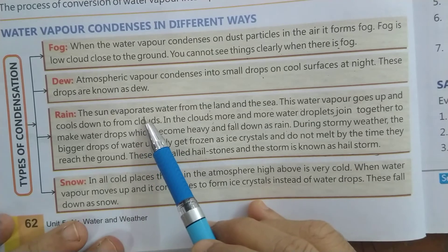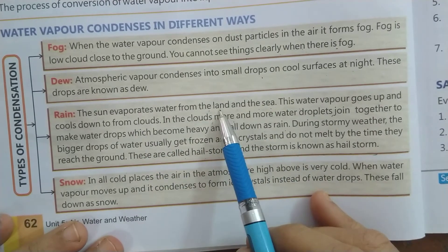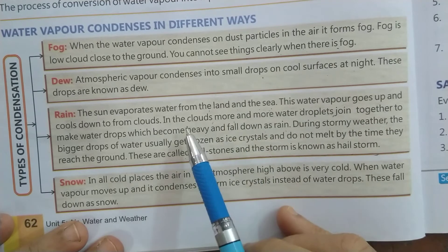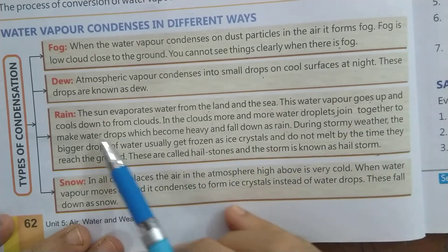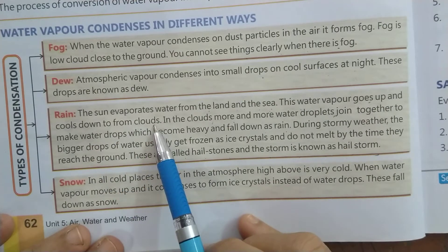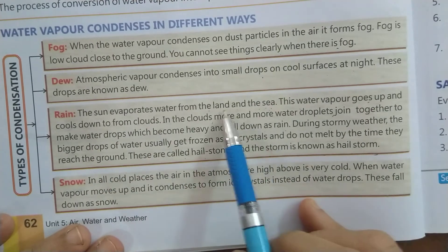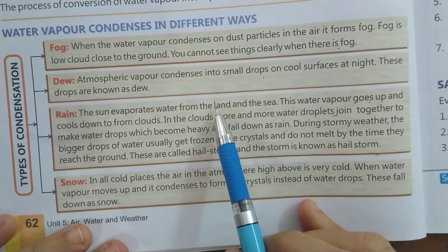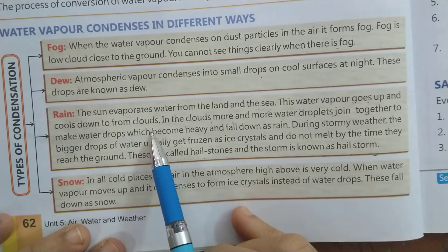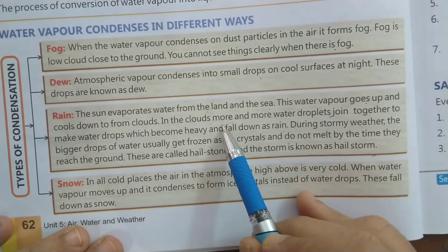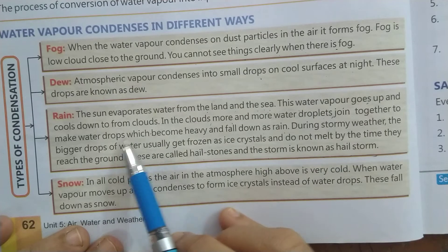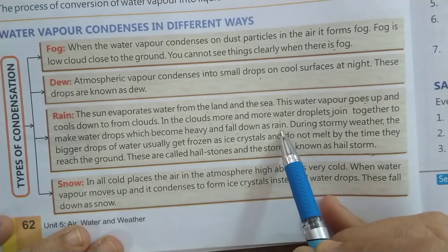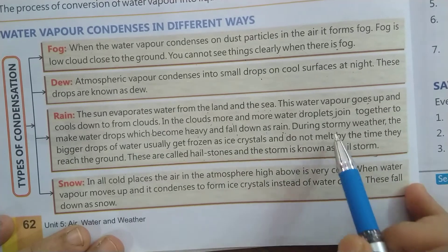Sun, water evaporate कर देता है land और sea से — मतलब जमीन में और समुद्र में जो पानी है उसका पानी evaporate हो जाता है। Evaporate होकर यह ऊपर जाता है और cool होकर cloud form करता है। यह water vapor, सूरज की गर्मी से water vapor में बनता है और ऊपर चला जाता है। वहाँ पे ठंडा होकर clouds form करता है। Clouds में और भी water droplets add होते जाते हैं जिससे कि heavy हो जाता है और फिर rain के रूप में नीचे गिरने लगते हैं।